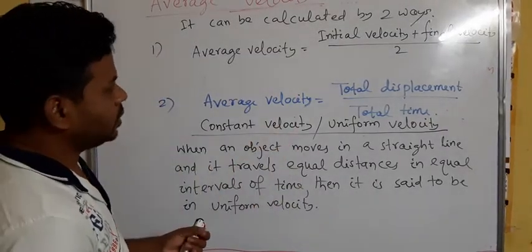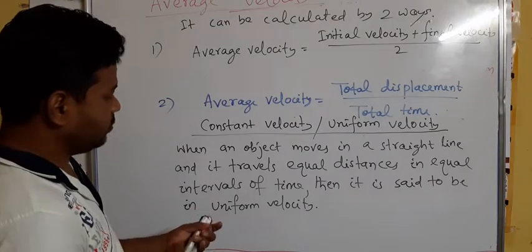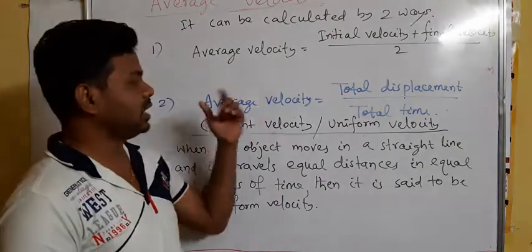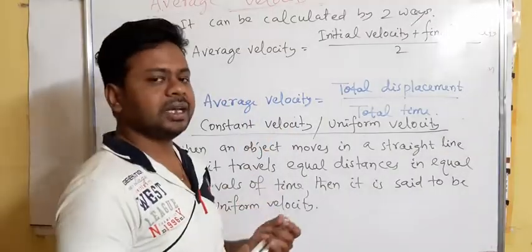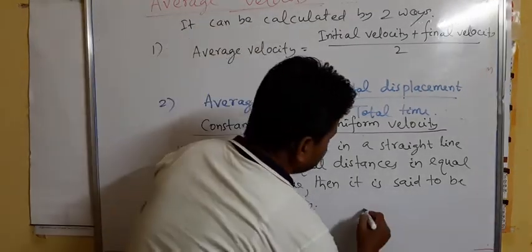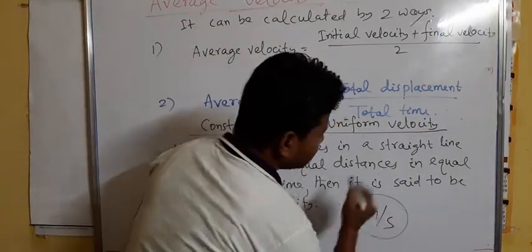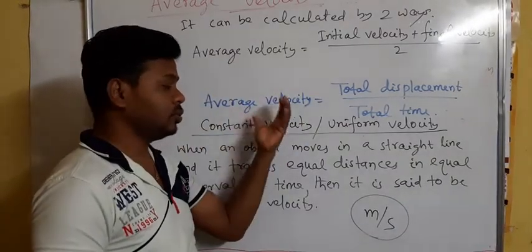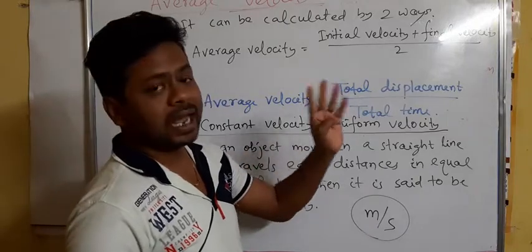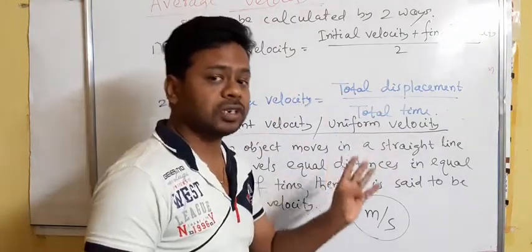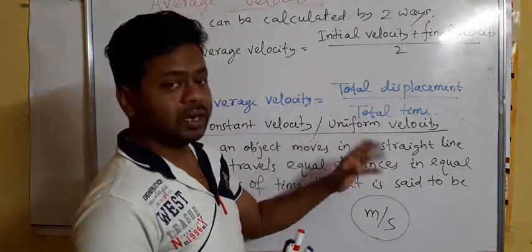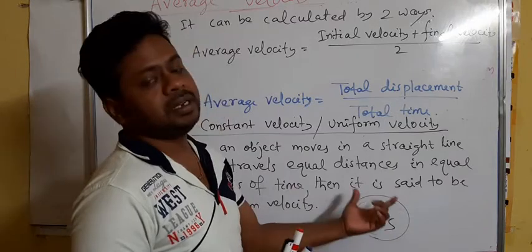The unit of constant velocity, average velocity, and every type of velocity is the same — meter per second. Remember, meter per second is the assigned unit of both speed and velocity. So, speed, average speed, constant speed, velocity, constant velocity, average velocity — all six physical quantities have the assigned unit of meter per second.